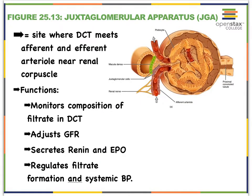The juxtaglomerular apparatus, or the JGA — if you listen to the name, 'juxta' meaning sitting at the junction of the glomerulus — this is an apparatus formed between the junction of your distal convoluted tubule and your arterioles, especially your afferent arteriole. There are different parts to this so-called apparatus.